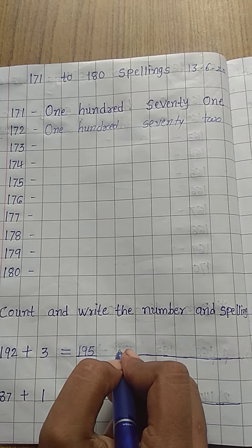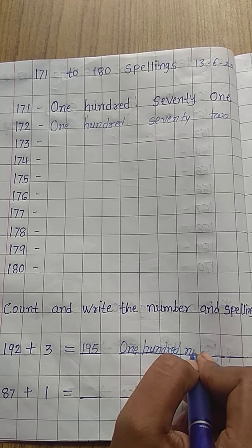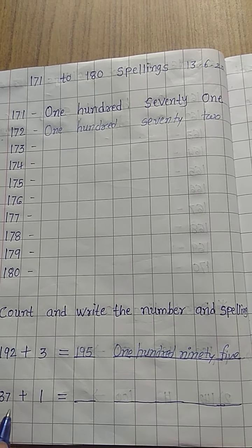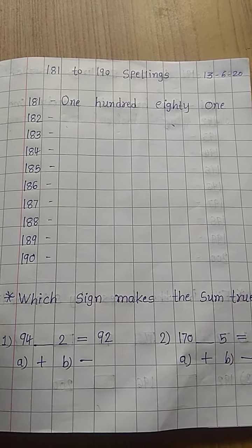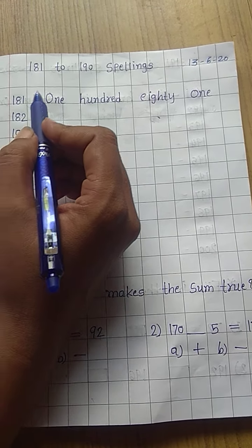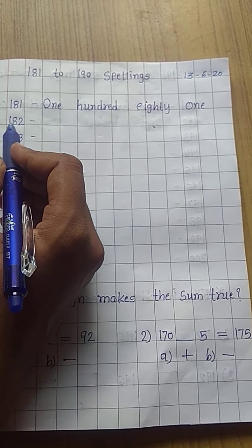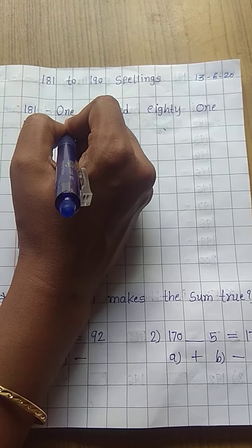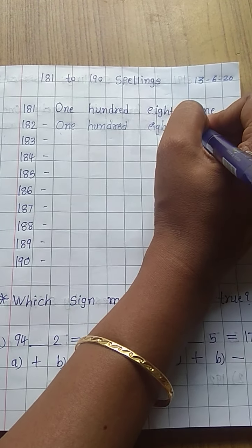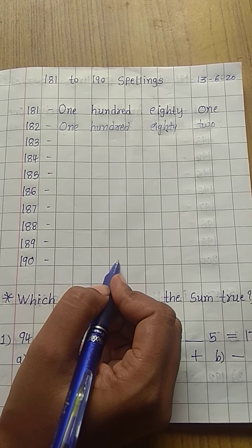And write the spellings: O-N-E, HUNDRED, E-I-G-H-T-Y, EIGHTY, O-N-E, ONE — that is 181. After 182, write here: O-N-E, HUNDRED, E-I-G-H-T-Y, EIGHTY, T-W-O, TWO. Now 183 to 190 spellings, write down in your notebook.